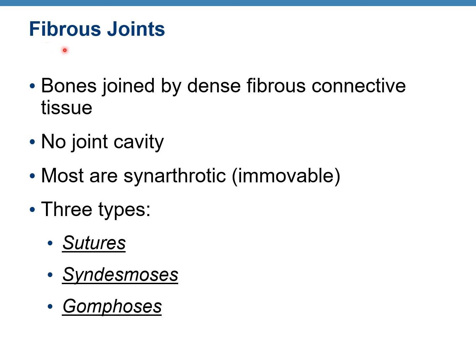We're going to start with fibrous joints. Bones are joined by dense fibrous connective tissue. There is no joint cavity, and most of them are synarthrotic — immovable. Three types of fibrous joints include sutures, syndesmosis, and gomphosis.